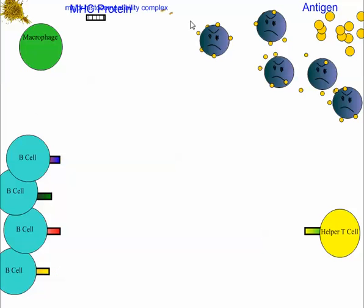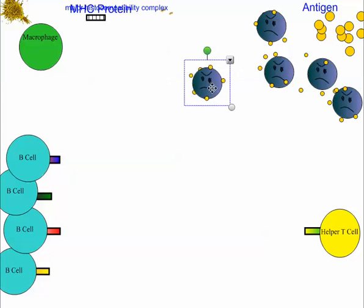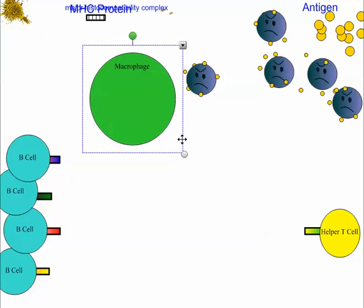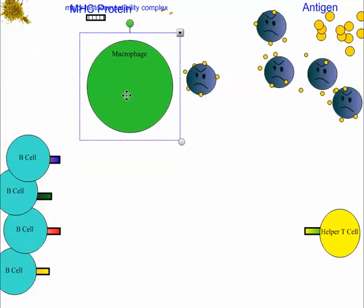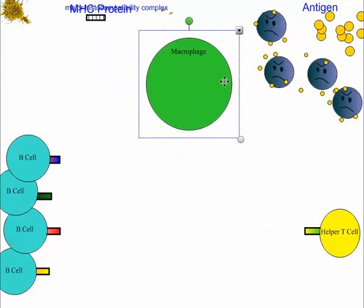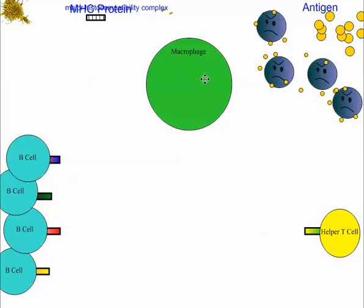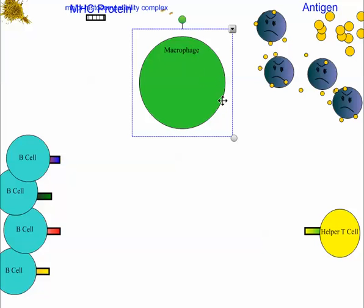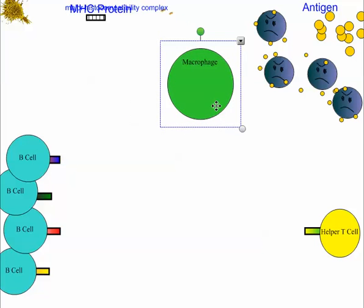When one of these bad guys enters your body through a cut or saliva or something like that, macrophages will come and take them in by endocytosis. The plasma membrane folds and sucks the pathogen right in. Once inside, it gets digested by lysosomes that contain enzymes.